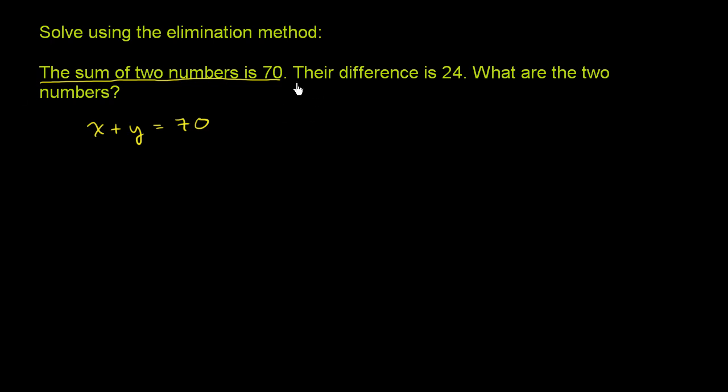The second sentence says their difference is 24. So that means that x minus y is equal to 24. We're just going to assume that x is the larger of the two numbers and y is the smaller one, so when you take the difference like this, you get positive 24.